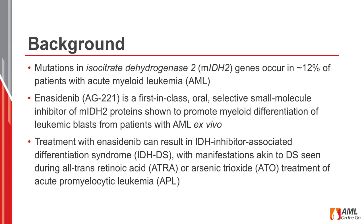Mutations involving the IDH genes occur in approximately 20 to 25 percent of patients with acute myeloid leukemia. Specifically, IDH2 mutations occur in about 10 to 15 percent of patients with AML. Enasidenib, a first-in-class oral and selective small molecule inhibitor of mutant IDH2 proteins, was demonstrated to promote myeloid differentiation of leukemic cells in preclinical models of AML.